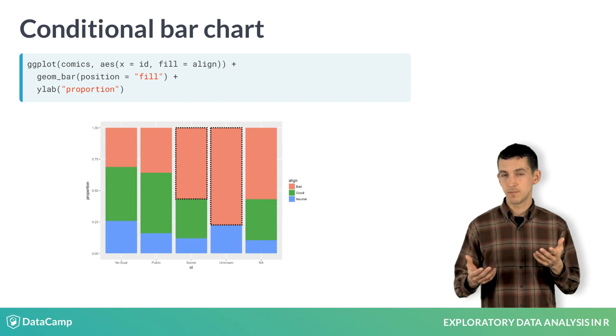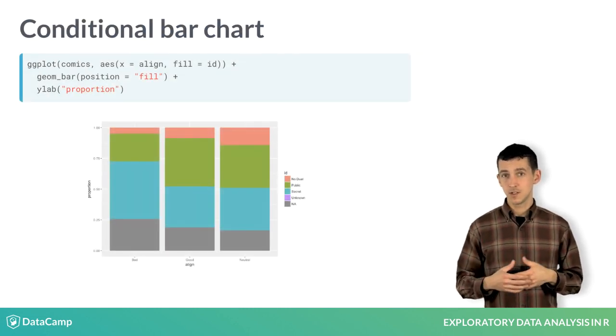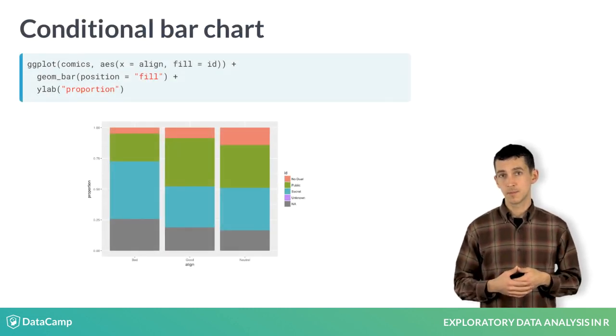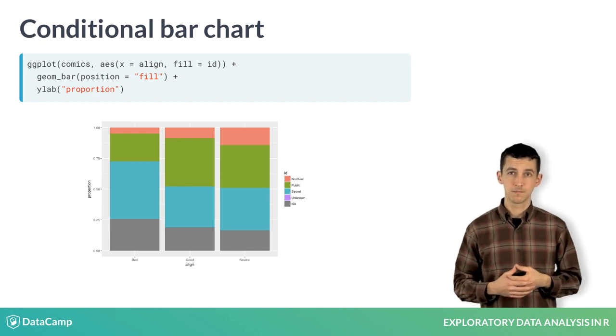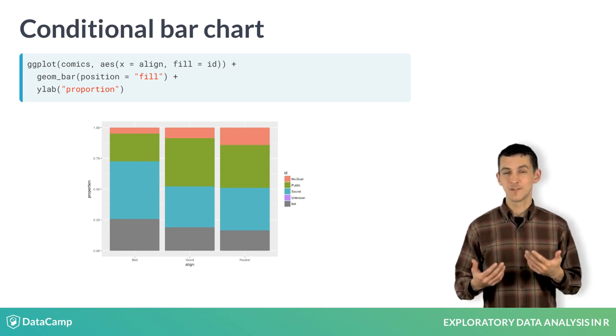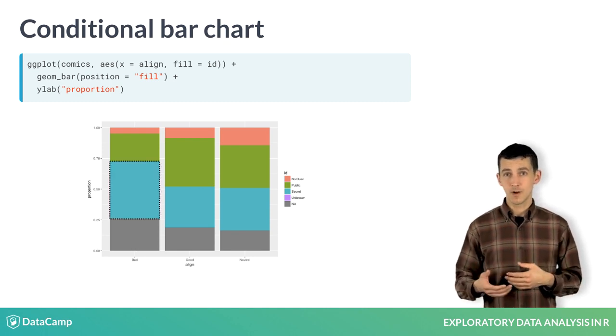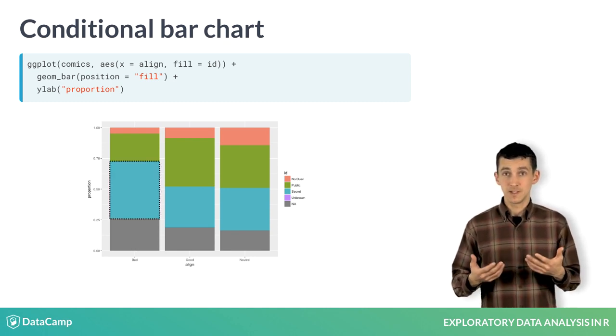We get a very different picture if we condition instead on alignment. The only change needed in the code is to swap the positions of the names of the variables. This results in a plot where we've conditioned on alignment, and we learn that within characters that are bad, the greatest proportion of those are indeed secret.